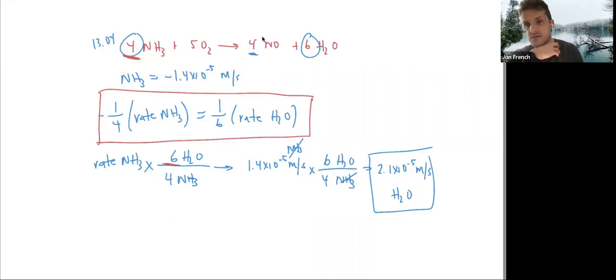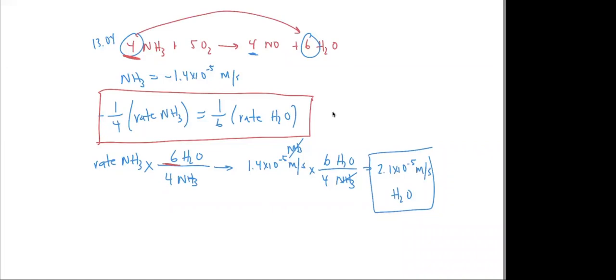Well, four to six is our ratio, because those are our coefficients for the two molecules that we're comparing the rates of. So I just want to clear something up. So that's positive because that's a product, so that'd be positive. But like the question before, it's asking the rate of consumption, so that would be negative.